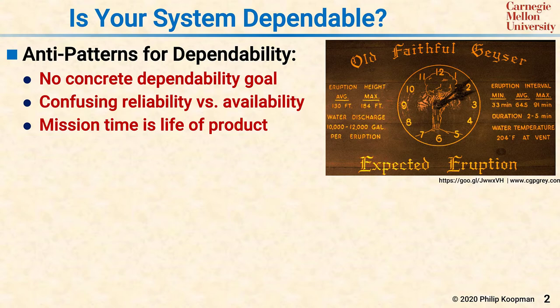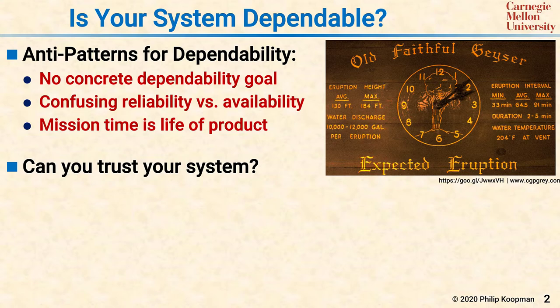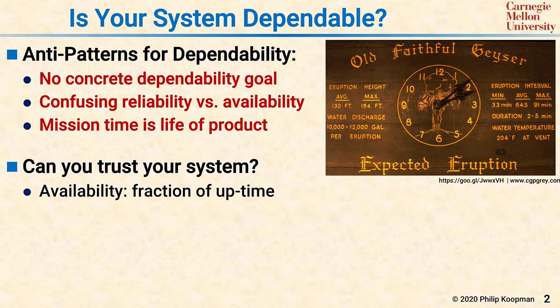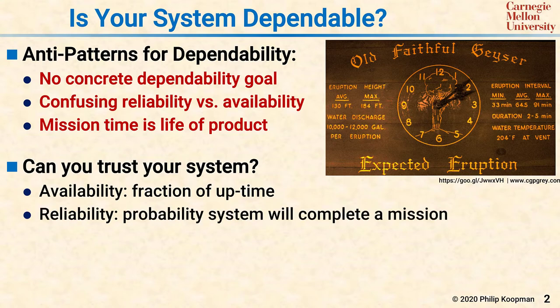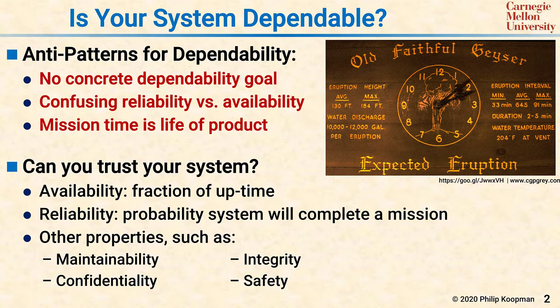Dependability boils down to asking whether you can actually trust your system. It is an umbrella term including many different properties. One key property is availability, which is the fraction of uptime for your system. Another quite different property is reliability, which is the probability that a system will successfully complete a mission of a particular duration. Other dependability properties beyond the scope of this discussion include maintainability, confidentiality, integrity, and safety.